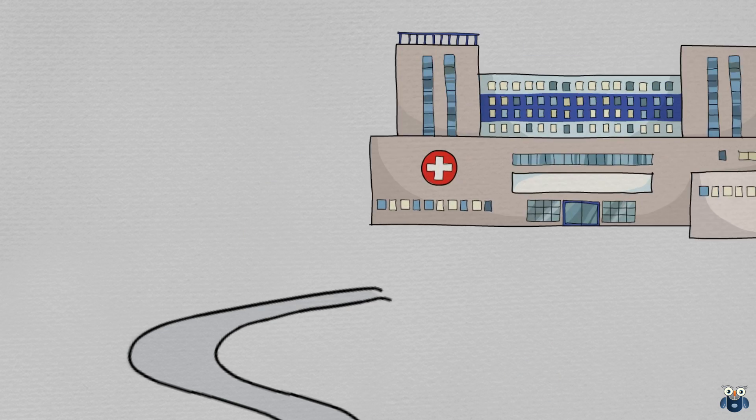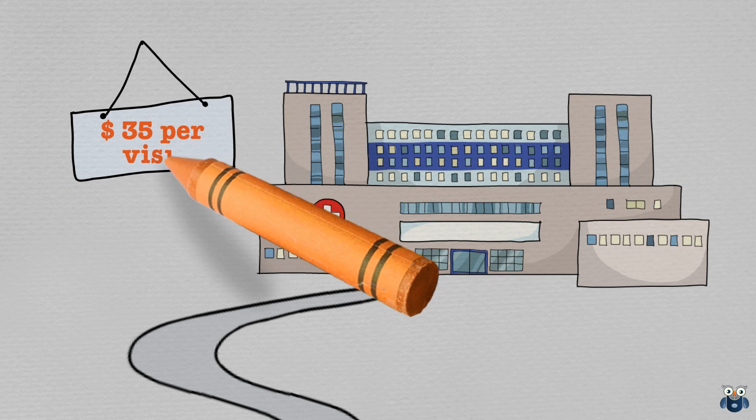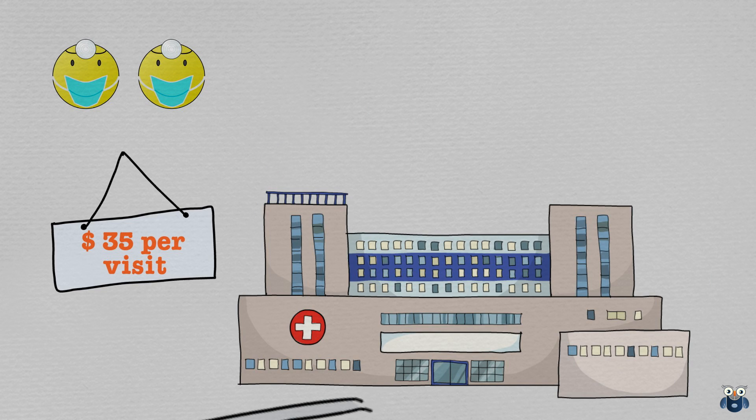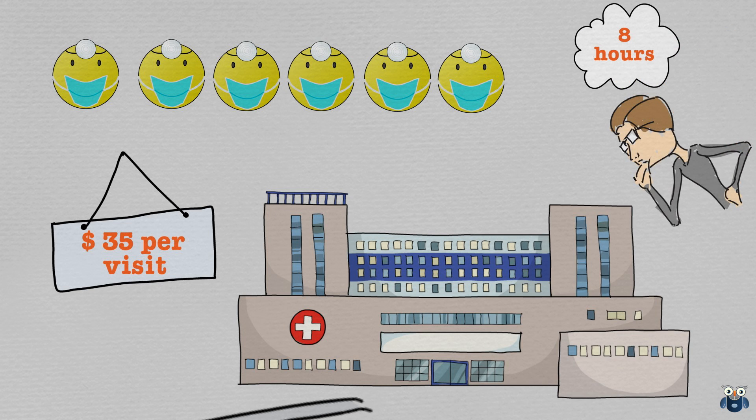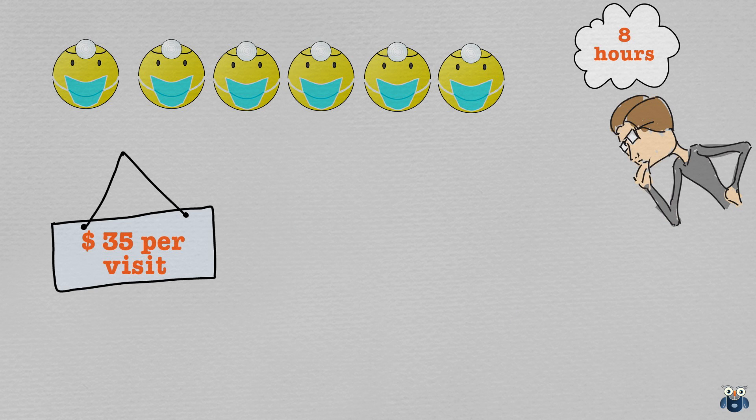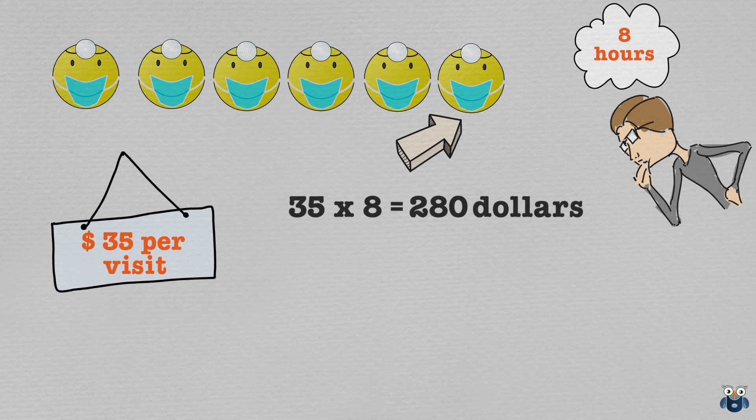A few weeks back, I went to the doctor who charged $35 per visit. The clinic had 6 doctors. So I began thinking, how much did all the doctors make in a day, assuming that they worked 8 hours? I began by calculating the amount for one doctor. So one doctor made 35 times 8, or $280 a day.